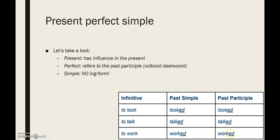This kind of schedule should ring a bell, as you had to learn this already for the irregular verbs. Zoals jullie hier zien, heb ik de tijd even in stukjes getrokken. 'Present' — de tijd heeft nog een invloed op de tegenwoordige tijd. 'Perfect' verwijst altijd naar het gebruik van het voltooid deelwoord. En 'simple' — er wordt geen -ing-form gebruikt.